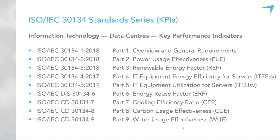This is a list of the standardized KPIs in the 30134 series. Part one covers the overview and general requirements. Part two, PUE, is probably the one people are most aware of by name, though they may not know it's defined by this document. It is no longer defined by the Green Grid document, so any proper reference to PUE should be made according to ISO/IEC 30134-2.